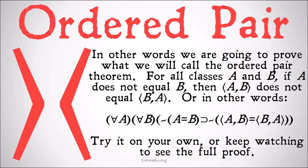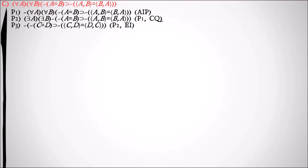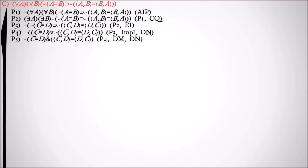If you want to, pause the video right now and try it on your own, or keep watching to see the full proof. So, this is our conclusion. To get here we are going to do an assumed indirect proof, taking our line down as a warning — this is going to be a long one. We're denying the conclusion. It's always great to deny an implication because you get two pieces of information from it. We'll use change of quantifier to get those as existentially quantified with our negation on the inside, and then we'll existentially instantiate A and B to C and D. We'll split our implication into a disjunction, affirming the antecedent and denying the consequent, using implication and double negation.